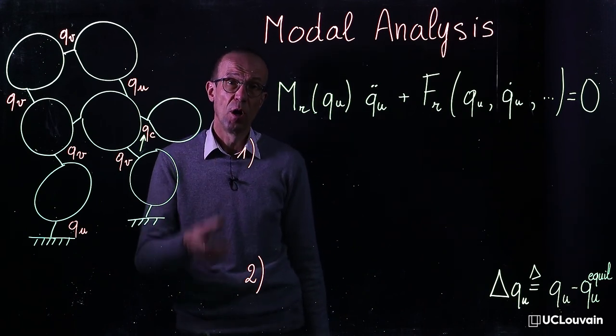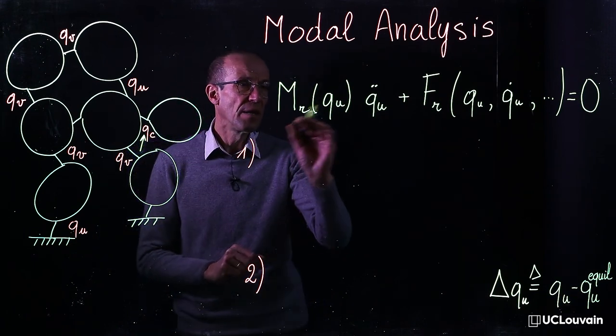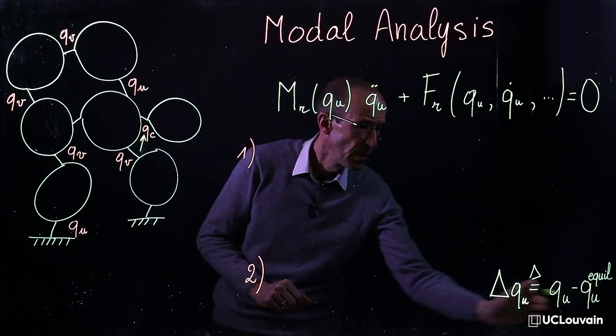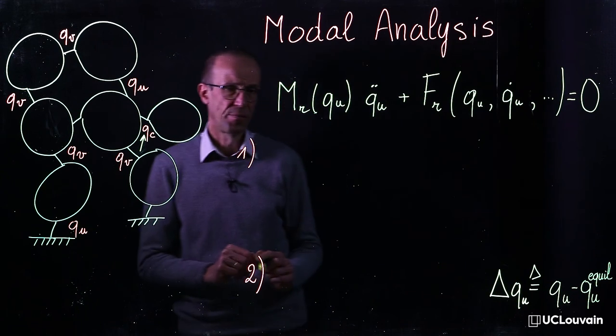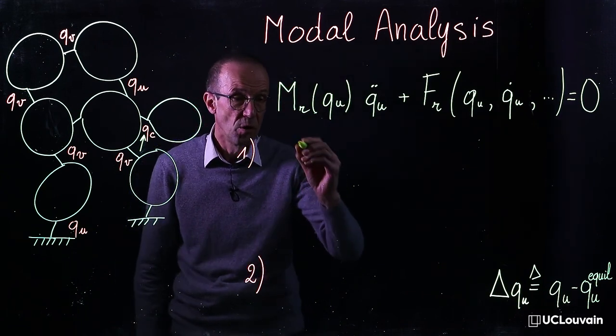It requires two steps. The first one consists in linearizing the equations of motion around the equilibrium. The equation once linearized reads as shown.